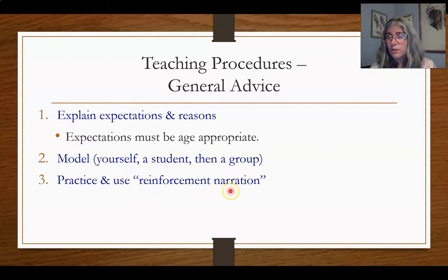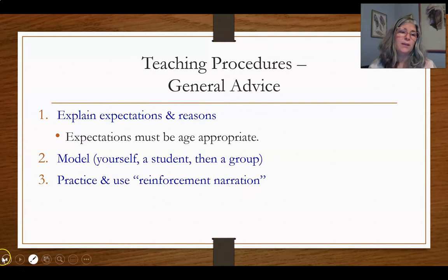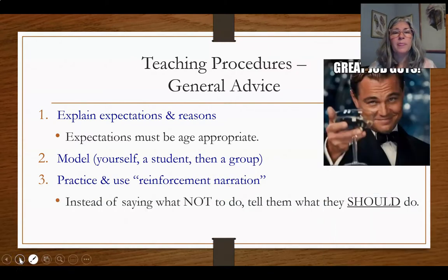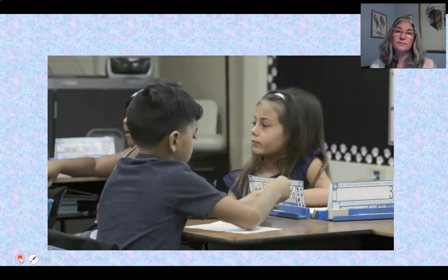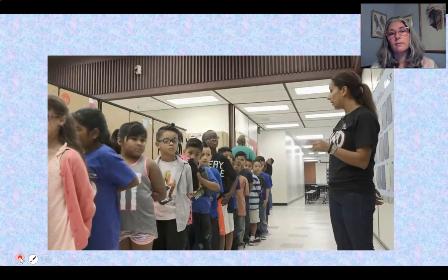Have students practice over and over again — things like lining up — so it becomes a true routine. Use reinforcement narration: while they're modeling and practicing, tell them what they're doing right. You'll want to correct what's wrong too, but if you just focus on 'don't do this and don't do that,' it's not helpful. They need to hear what they should be doing and get reinforcement when they do it correctly. As one teacher put it: 'I really like the way so-and-so is sitting up straight' — and you see all the little bodies straighten up. Positives work better than negatives.